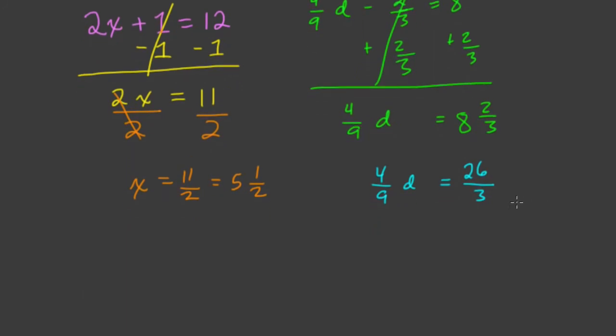So here we could then multiply both sides by the reciprocal, 9 over 4. When you have a fraction coefficient times a variable, just multiply by the reciprocal. It saves you a lot of time. Because what happens is here on the right-hand side, this cancels out to 1. We just have d equals what? We could do 26 times 9 over 12, but I notice that 3 goes into 9 three times. So it's like 9 divided by 3, and that's just 3.